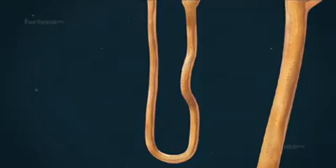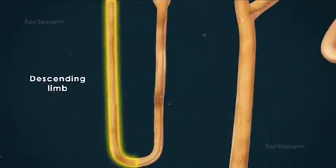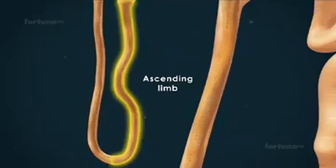The loop consists of two parallel limbs: one of which is descending and the other of which is ascending.